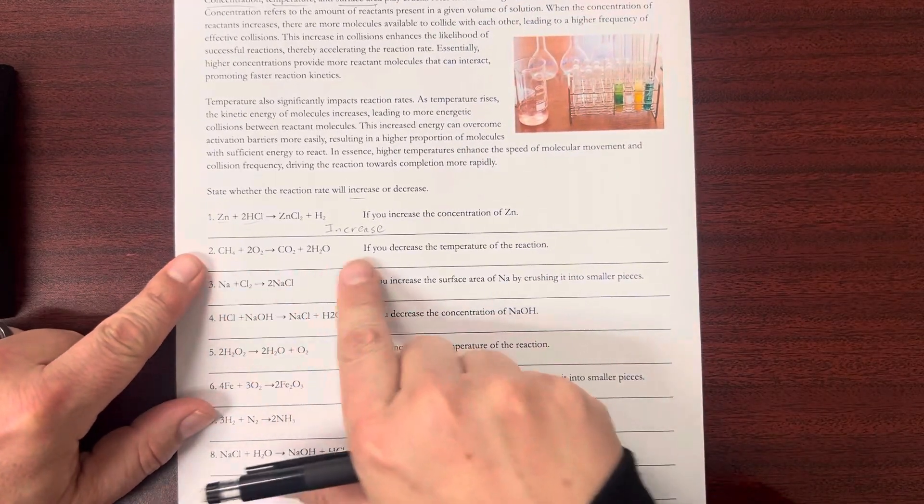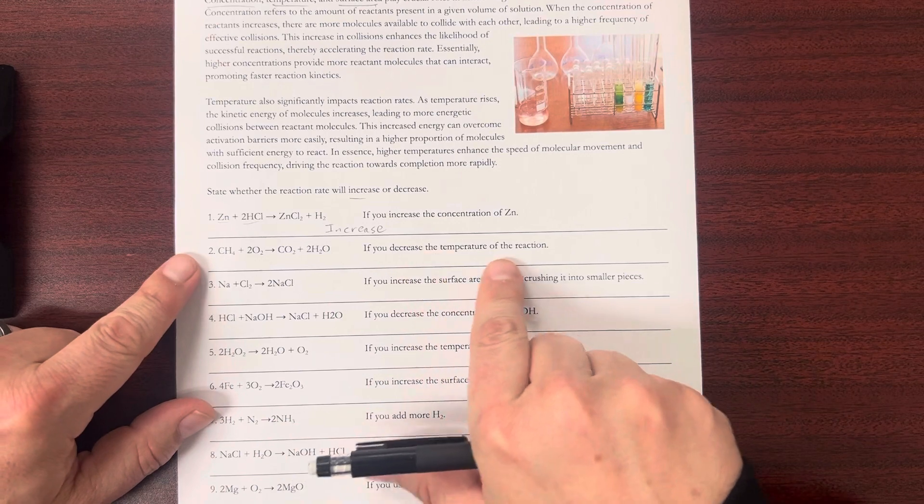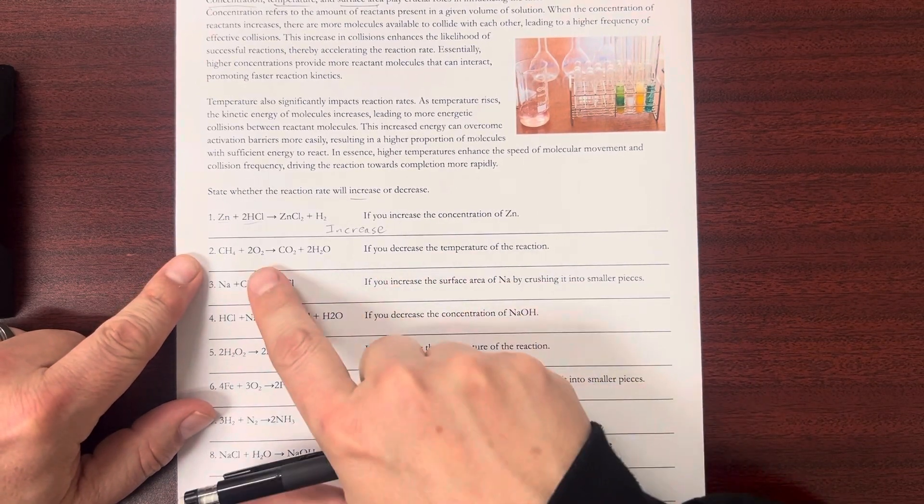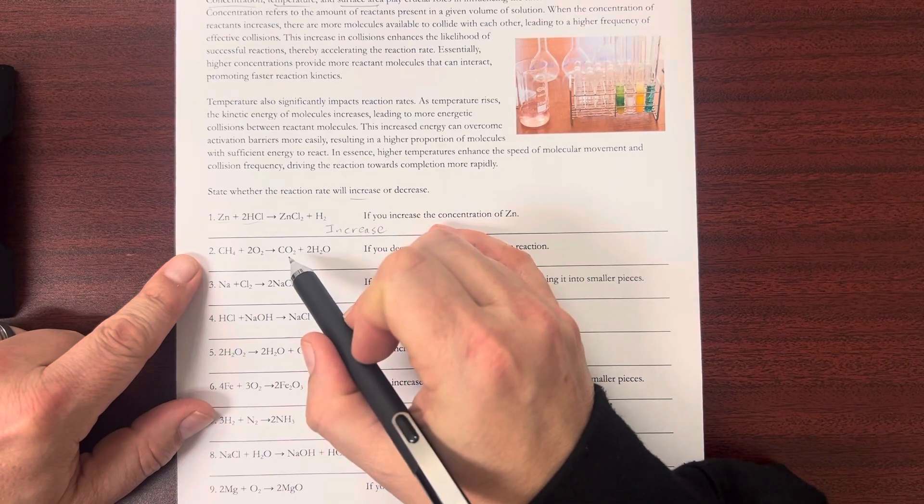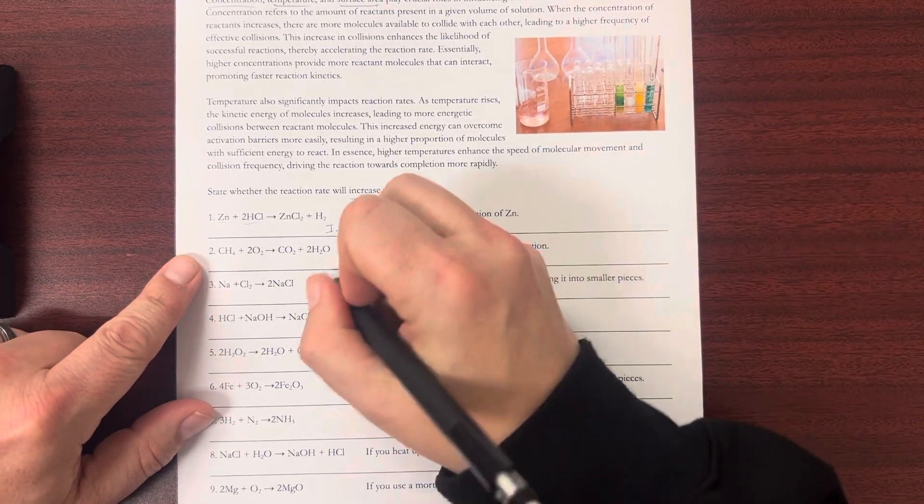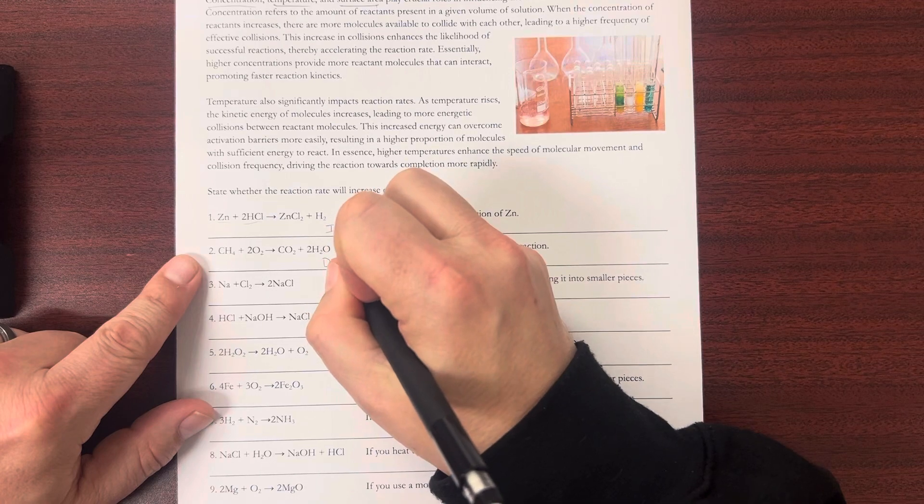Let's look at another one. I've got my equation, and it says, if you decrease the temperature, well, that's going to remove energy from this whole reaction, because you're decreasing the temperature. That's going to decrease the rate of reaction. So decrease.